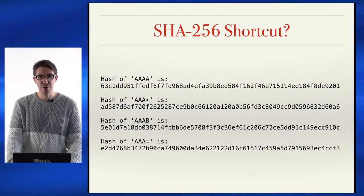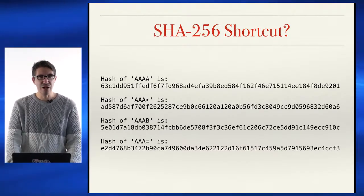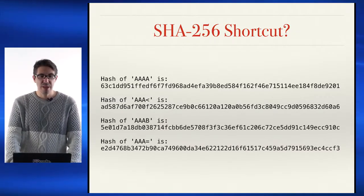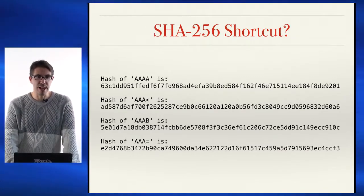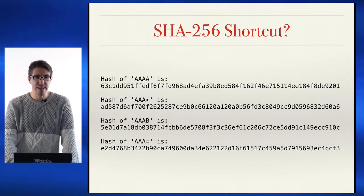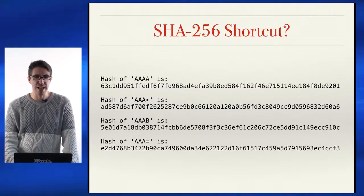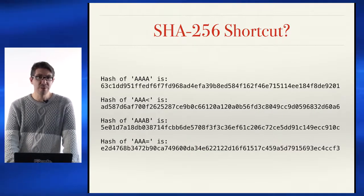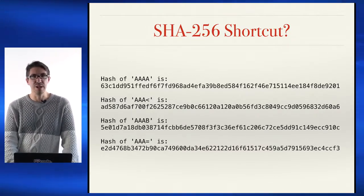SHA-256 produces output of 256 bits. For instance, the hash of AAAA is 63C... and unlike bad hash, look at the next hash function result: AAAA with a less-than sign — this changes the result of the output dramatically. It's not just moved up or down a little bit — even going from AAAA to AAAB gives you a large amount of modification in the output data.